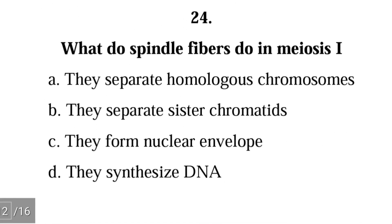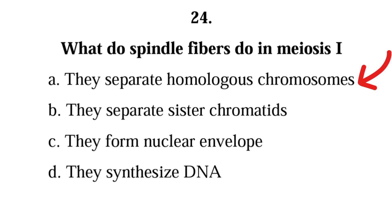Question 24: What do spindle fibers do in meiosis 1? A. they separate homologous chromosomes, B. they separate sister chromatids, C. they form the nuclear envelope, D. they synthesize DNA. The correct answer is A; spindle fibers separate homologous chromosomes in meiosis 1. In meiosis 2, spindle fibers separate sister chromatids.